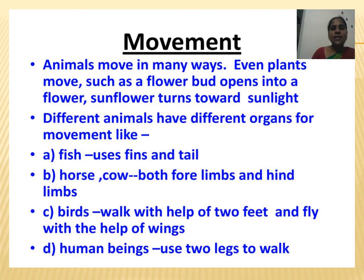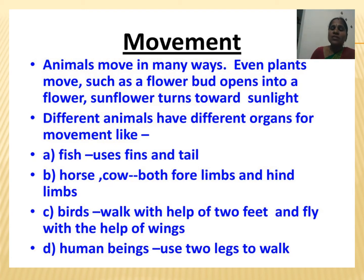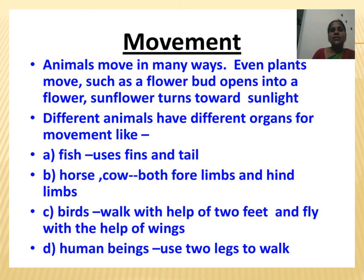Different animals have different organs for movement. Fish uses fins and tails to move. Horses, cows, and some animals use their limbs to move — they have four limbs: two hind limbs and two forelimbs. Birds can walk with their feet and fly with their wings. Human beings use two legs to walk. Each and every living thing shows movement in different ways.